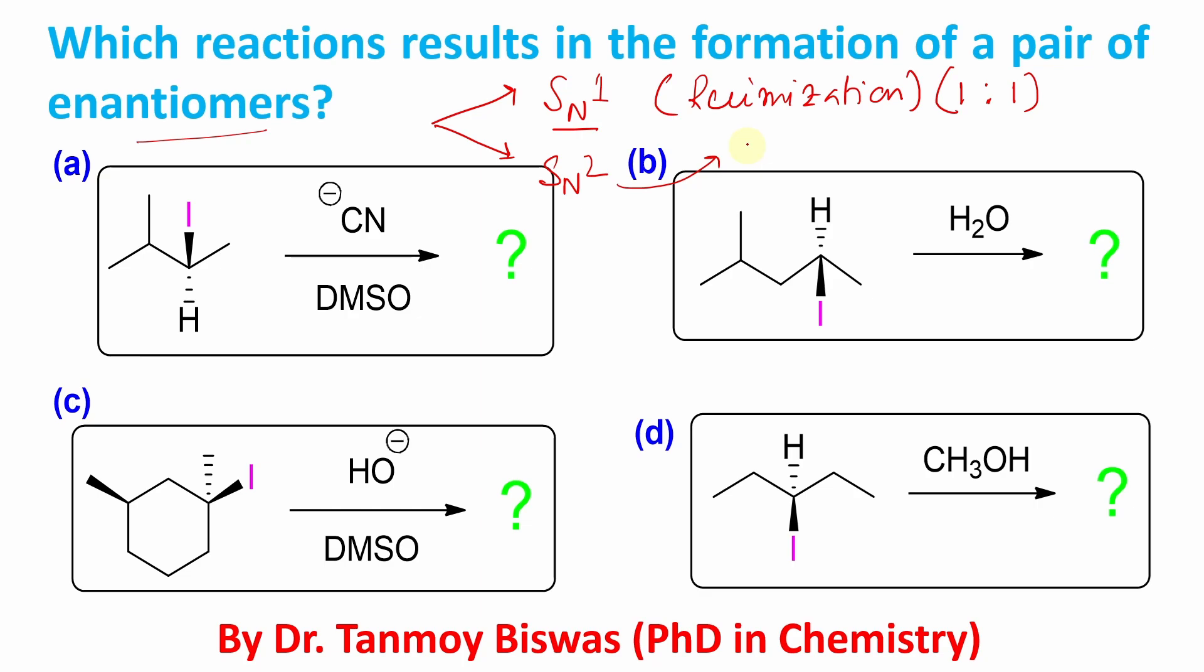In SN2, it results in inversion in configuration. So both enantiomers will not be produced, only one will be produced. So what is actually the question? Which of the reaction follows SN1 pathway such that a pair of enantiomers or racemic mixture could be obtained? So this is the actual question.